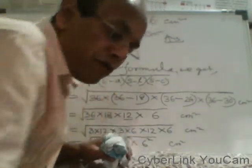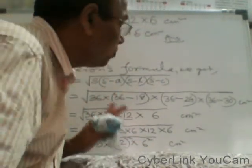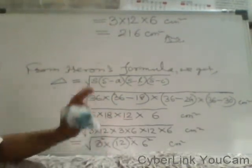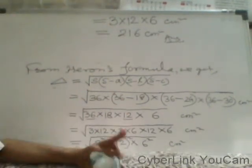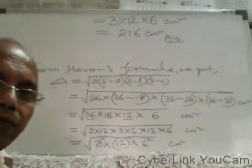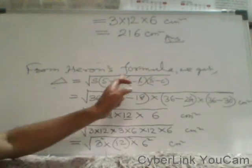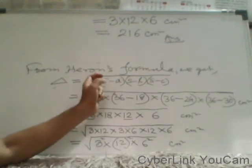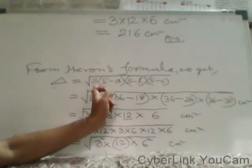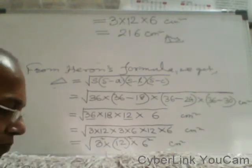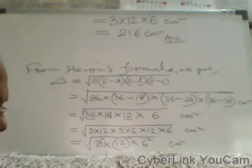Students, now you have understood how Heron's Formula is useful for us. In any triangle where 3 sides are given, you can easily apply Heron's Formula. First find the semi-perimeter, then put the values in the formula and you will get the result.